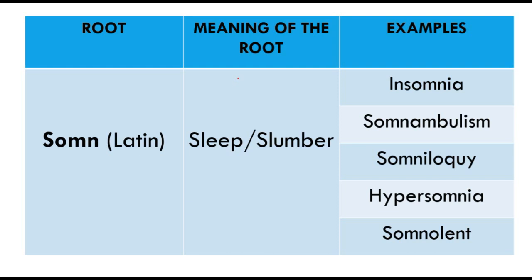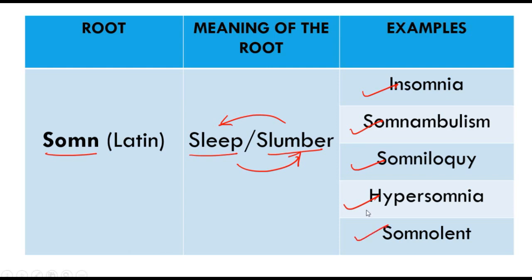The first root is 'somn'. 'Somn' is a Latin root which means sleep or slumber — slumber and sleep are synonyms. There are five example words: insomnia, somnambulism, somniloquy, hypersomnia, and somnolent. The beauty is that the meaning of the root will always reflect in the meaning of each word.